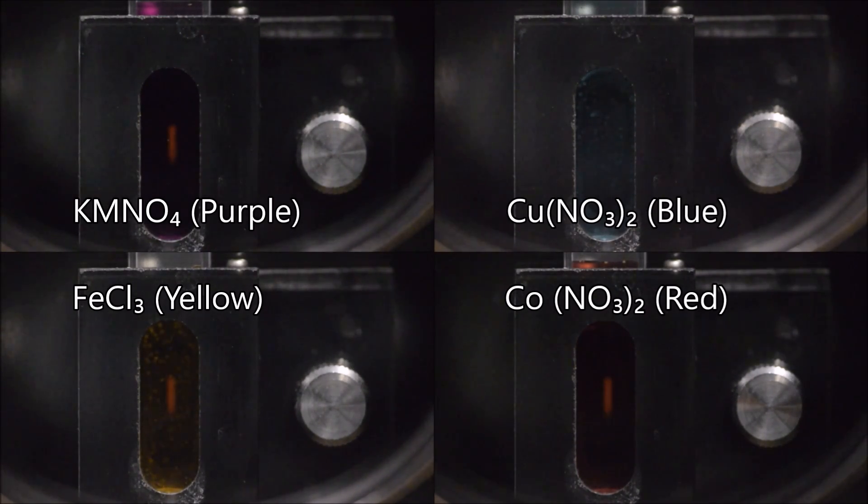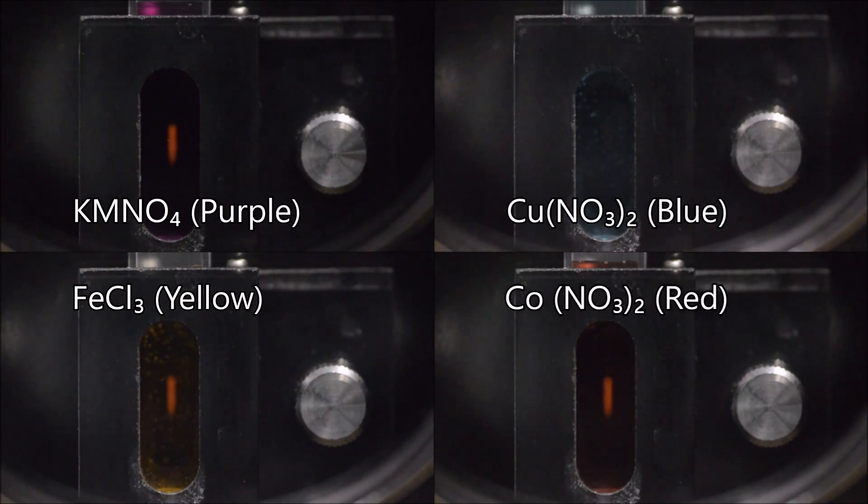But it does make sense why we would use red light to measure the amount of copper sulfate or blue appearing material in a solution.